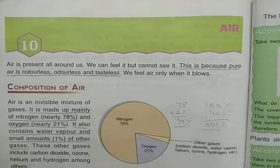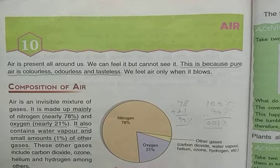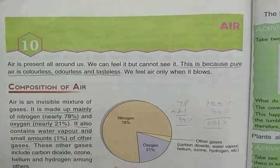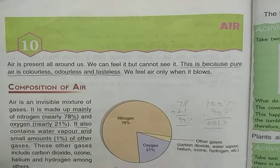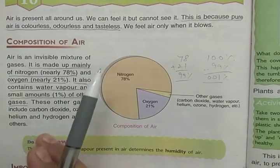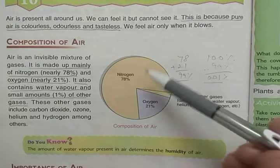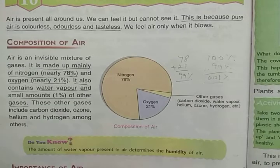In the previous video we started lesson number 10 on air. We discussed that pure air is colorless, odorless, and tasteless. We are not able to see air and only feel it when it blows. Air is an invisible mixture of gases — mainly nitrogen, followed by oxygen, and then other gases.